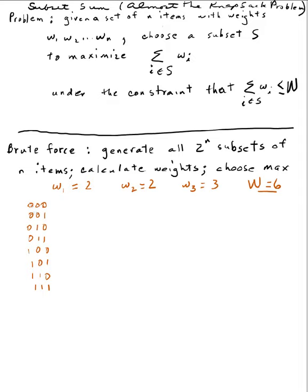Zero indicates that that item is not present, and one will indicate that that item is present. So the subset I'm referring to right here is the empty set. This subset that I'm referring to right here is W3 only. I'm not going to put the set markers anymore to get cluttered. This subset right here indicates W2 only. Here I have W2 and W3. Here W1 and W2 and W3 right here.